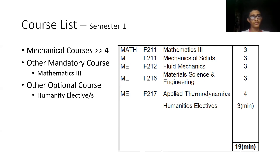In disciplinary electives, there are projects such as SOP (study oriented project), DOP (design oriented project), and LOP (laboratory oriented project), as well as other taught courses. All of these count towards DEL, and you must complete a minimum of four DELs in mechanical engineering topics.